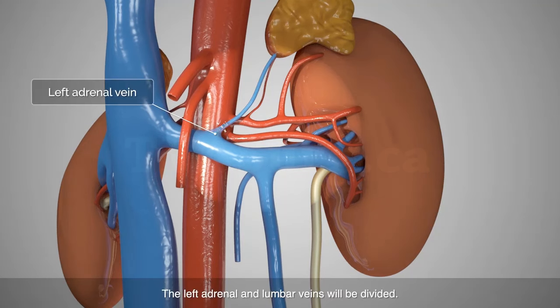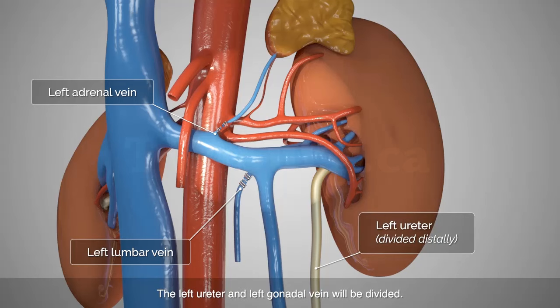The left adrenal and lumbar veins will be divided. The left ureter and left gonadal vein will also be divided.